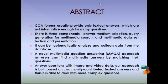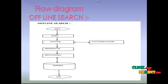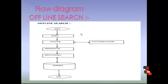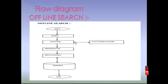Now let's see the flow diagram of our project. There are four processes involved. The first one is offline search. In offline search, users provide a query and we search the information in our database. We analyze the query to determine which ones need multimedia data. If the query needs multimedia data, we analyze the key pattern and select the relevant multimedia data from the database.